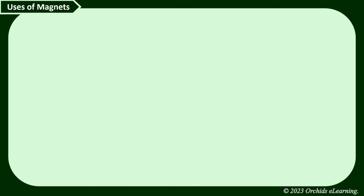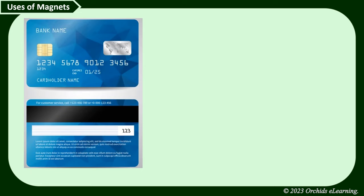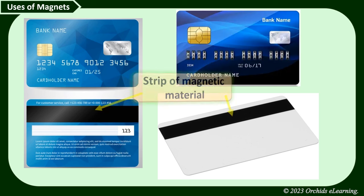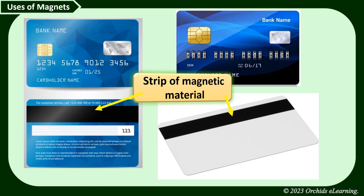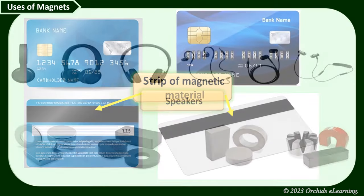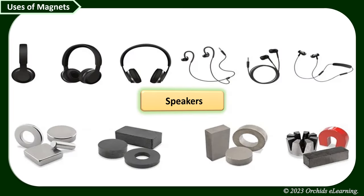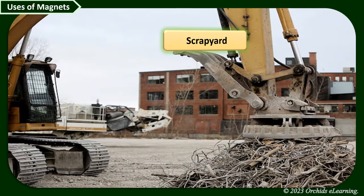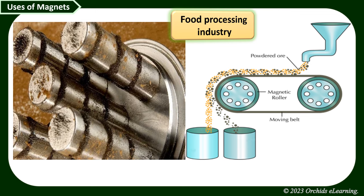Magnets have several uses. Credit cards, ATM cards, and identity cards have a strip of magnetic material that stores information. Headphones and speakers of stereo systems use magnets. Refrigerator doors are kept closed with the help of magnets. Magnets are used for picking up iron objects from scrap yards, and in the food processing industry to purify raw materials by removing impurities.